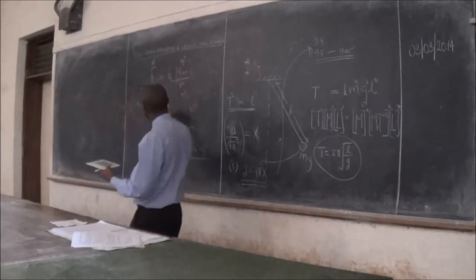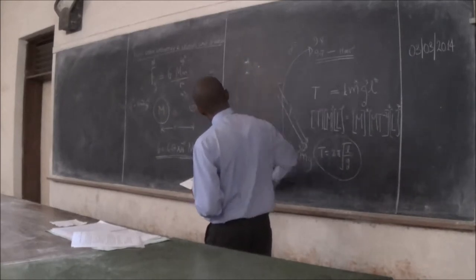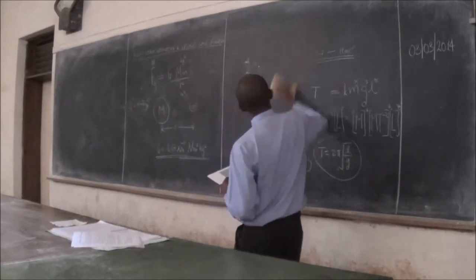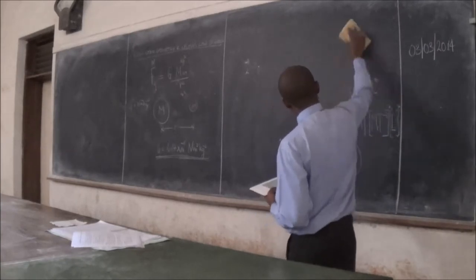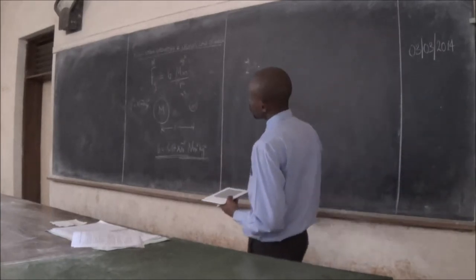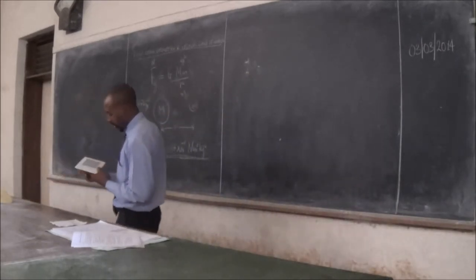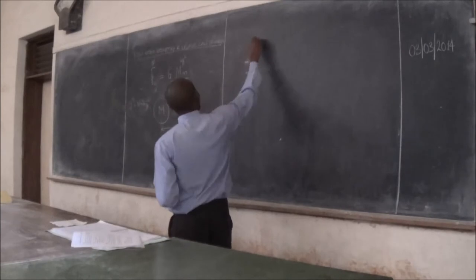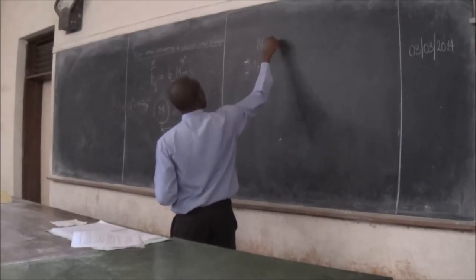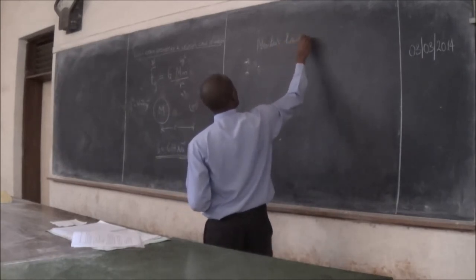After we have known these assumptions of the space, medium space being uniform, being isotropic, that is being the same homogeneous in all directions, then we move on to the Newton's laws.